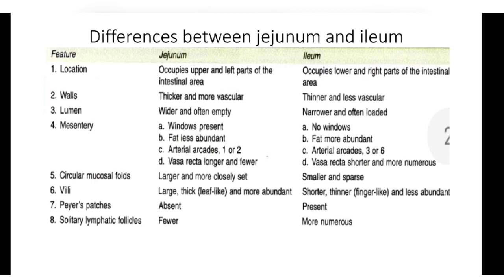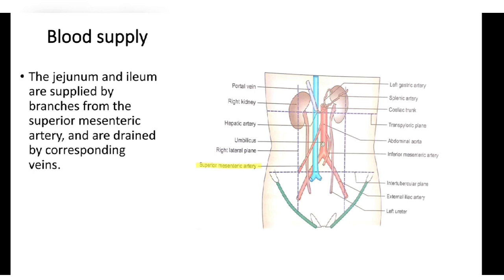Arterial arcades — 1 to 2 in jejunum, 3 to 5 in ileum. Vasa recta — longer and fewer in jejunum, shorter and more numerous in ileum. Circular mucosal folds — larger and more closely set in jejunum, smaller and sparse in ileum. Villi — large, thick, leaf-like and more abundant in jejunum; smaller, thinner, finger-like and less abundant in ileum. Peyer's patches — absent in jejunum, present in ileum. Solitary lymphatic follicles — fewer in jejunum, numerous in ileum.